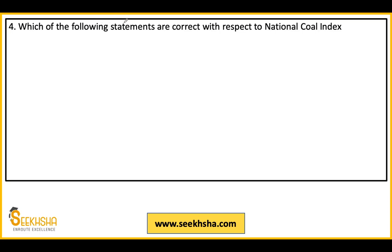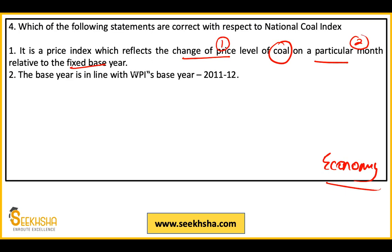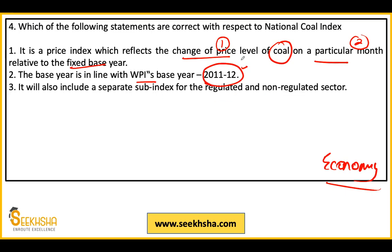Fourth question: Which of the following statements are correct with respect to the National Coal Index? Statement 1: it is a price index which reflects the change in price level of coal on a particular month relative to the fixed base year. Statement 2: the base year is in line with WPI's base year, that is 2011-12. Statement 3: it will also include a separate sub-index for the regulated and non-regulated coal sector.